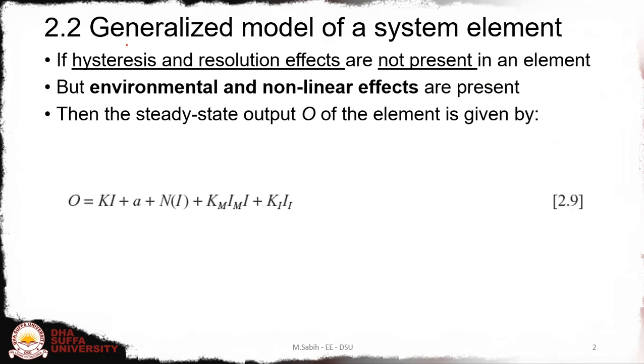If we talk about the generalized model of a system element, it should be able to represent all the possible characteristics which are dominant. Now assume if we ignore hysteresis or resolution effects—assume that they are not present in the element—and the environmental effects and the nonlinear effects are present in that element, then the steady-state output equation can be written as a linear part KI plus a nonlinear part N(I), and environmental effects.